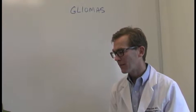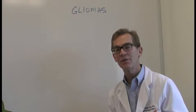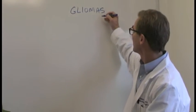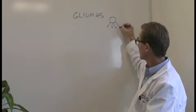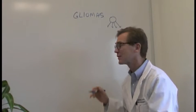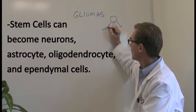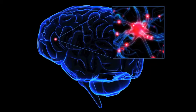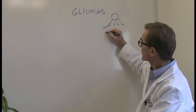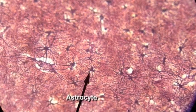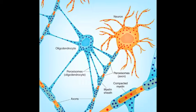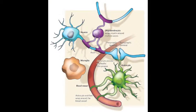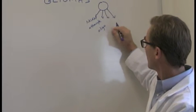So the brain has multiple different types of cells, and when the brain has a stem cell, these stem cells can give off daughter cells and these cells can become essentially one of four types of cells: neurons, astrocytes, oligodendrocytes, and ependymal cells.